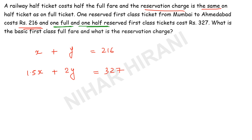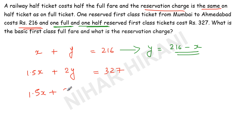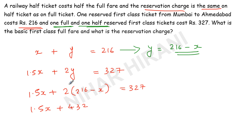That makes 327. So here I have both equations. From the first equation, y equals 216 minus x. I will substitute this value into the second equation. So it becomes 1.5x plus 2 times (216 minus x) equals 327. Simplifying: 1.5x plus 432 minus 2x equals 327.